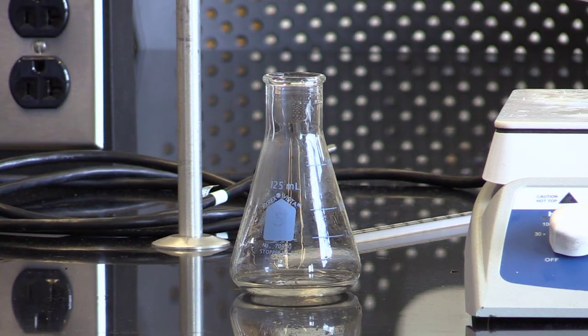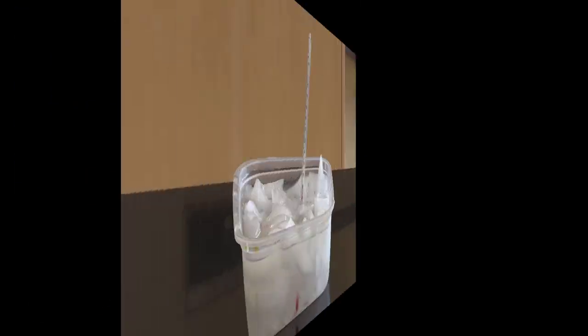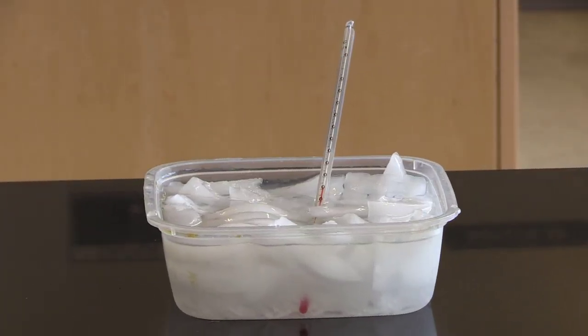As it is cooling, I will set up the rock salt ice bath. Having a rock salt ice bath, the temperature should get pretty cold, around minus eight degrees Celsius. This is evidence of the colligative property freezing point depression. When the particles of calcium chloride dissolve into the water, the solution can have a lower freezing point.